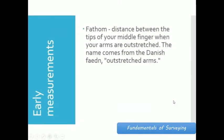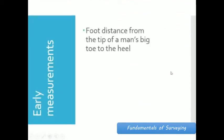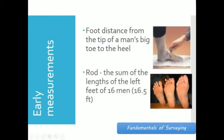Next, fathom, the distance between the tips of your middle finger when your arms are outstretched, or wingspan. Next, foot, distance from the tip of a big man's toe to the heel. And rod, the sum of the lengths of the left feet of 16 men.